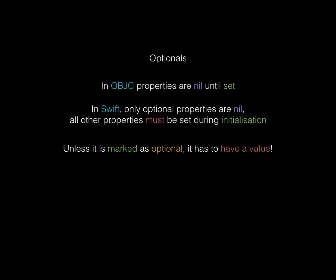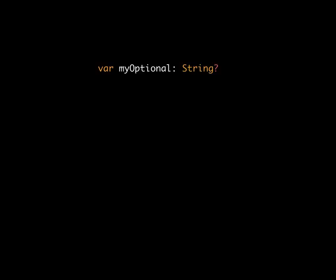Unless it's marked as optional, a property must have a value. You need to choose which values are optional, meaning the value will be nil until it's set. All optionals are marked with a question mark. When you call an optional variable, you won't get the value — you'll get true or false. Optionals are like a box that tells you whether there's something inside, and if you want the value you must unwrap it.